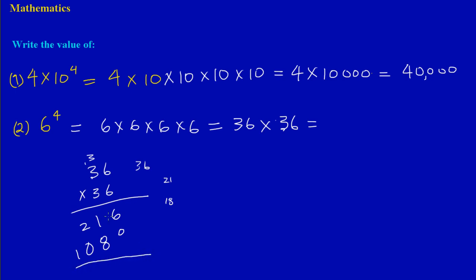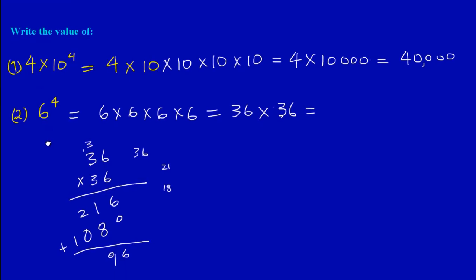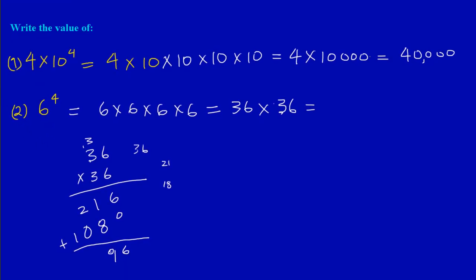Let me just straighten that out for you. So really, I'm adding: 6 plus 0 would give me a 6, 8 plus 1 would give me a 9, 2 plus 0 would give me a 2 here, and I would bring down my 1. So 36 times 36 would work out to be 1,296. For this, I would have for my answer 1,296.